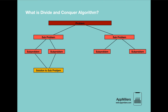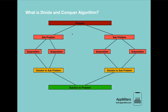We solve these smallest problems and combine them together to get a solution for their parent subproblem. Similarly, we do the same process on the other side — solving those subproblems and combining them to get their subproblem's solution. After getting solutions to both subproblems, we combine them to get the final answer to the original problem. This graph shows how divide and conquer algorithm works internally.